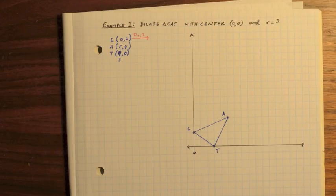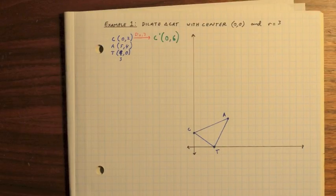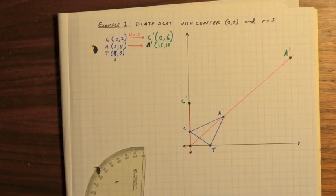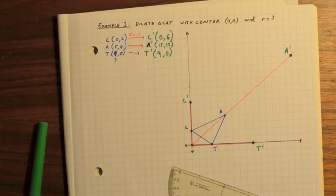So C maps to C prime. 0 times 3, of course, is 0, and 2 times 3 is 6. And so C prime, you can see, is 3 times the distance from the origin that C was. Likewise, A maps to 15, 12, and T maps to 9, 0.